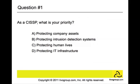Question number one: As a CISSP, what is your priority? The answer is C. Protecting human lives is your number one priority as a CISSP.